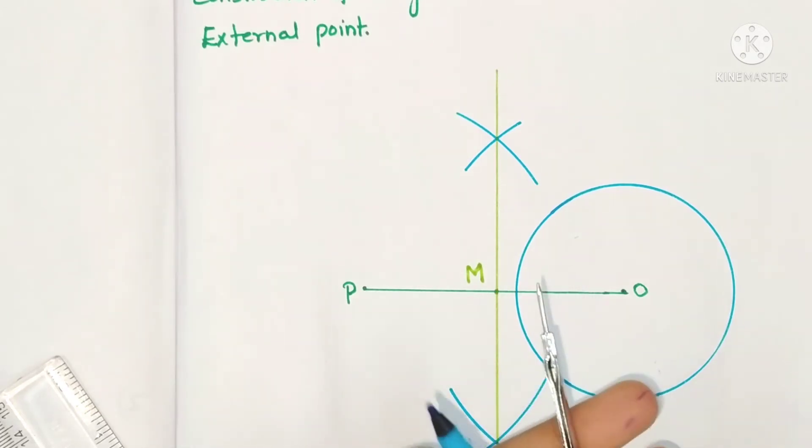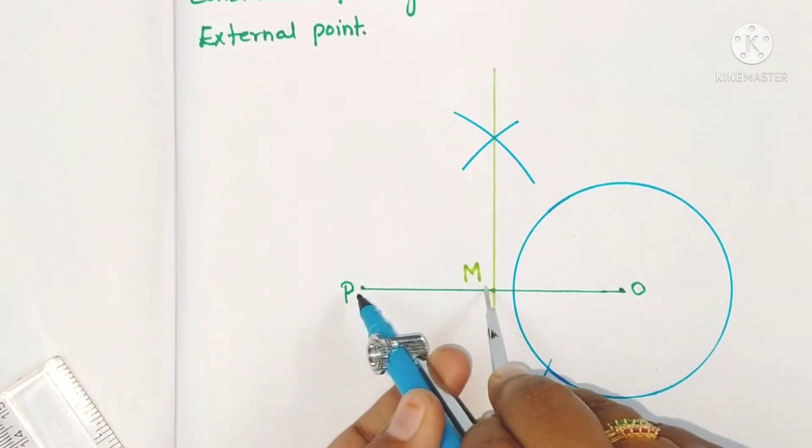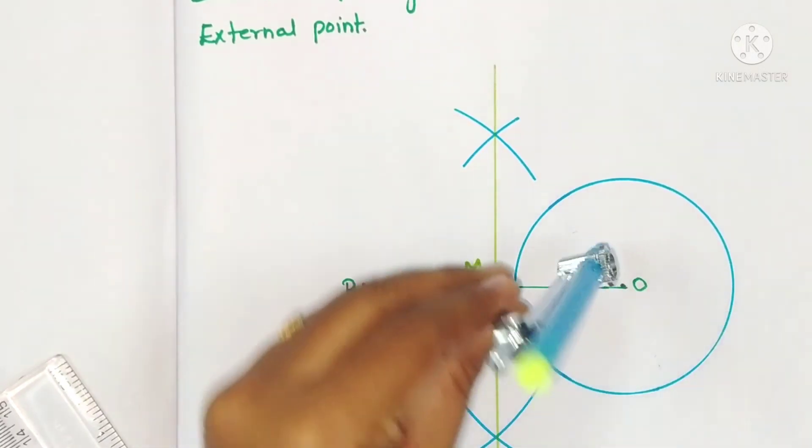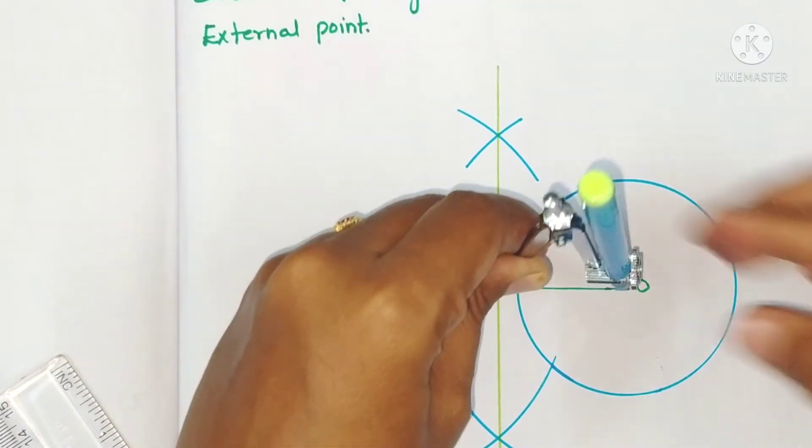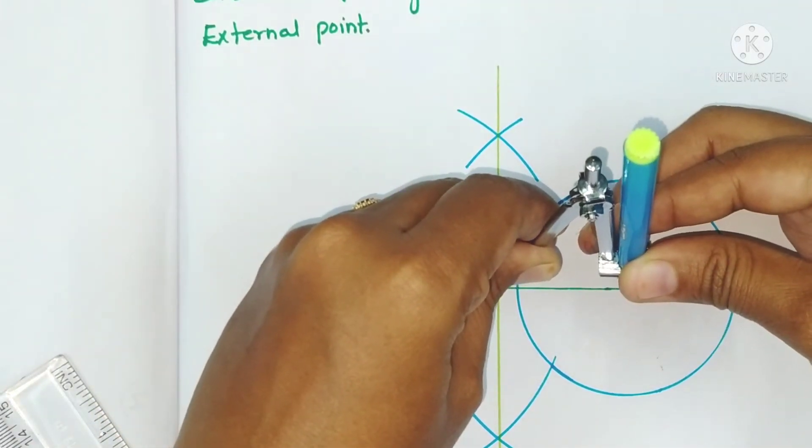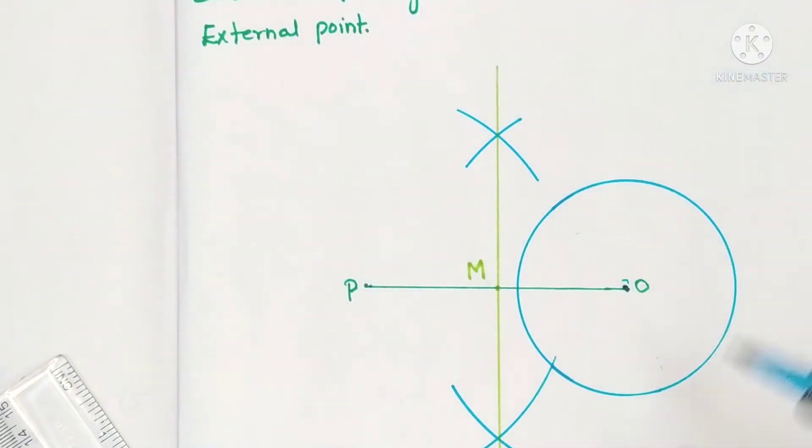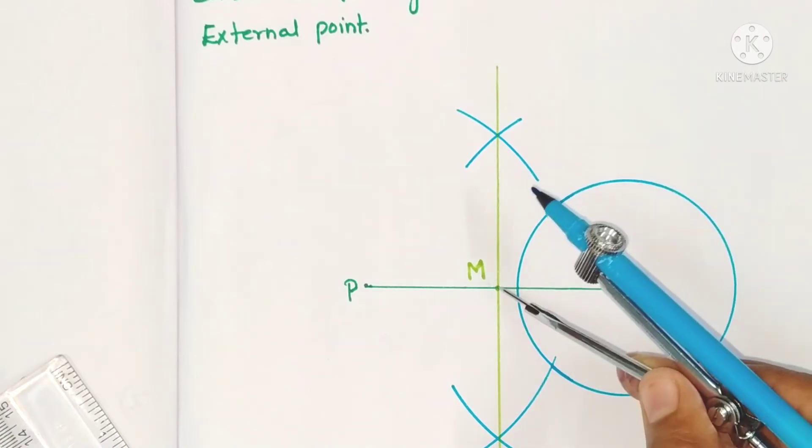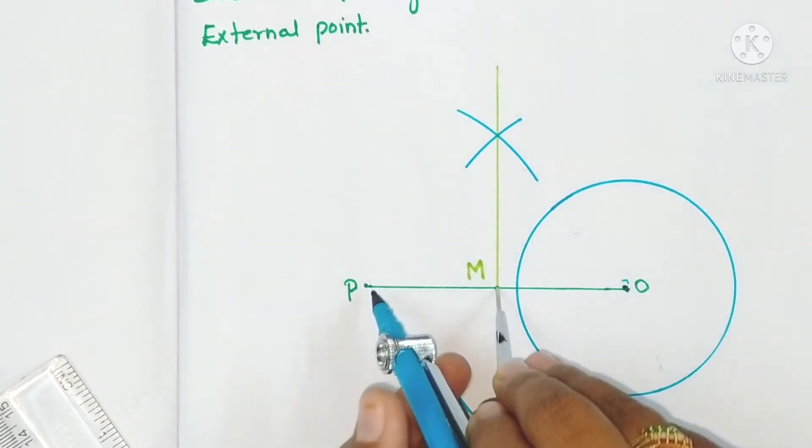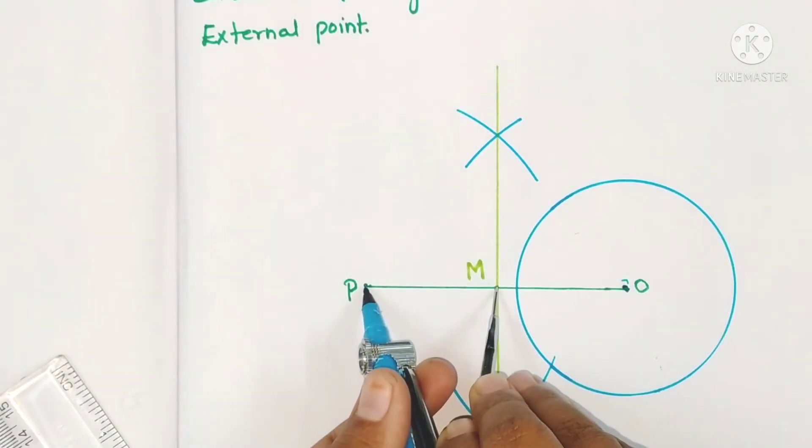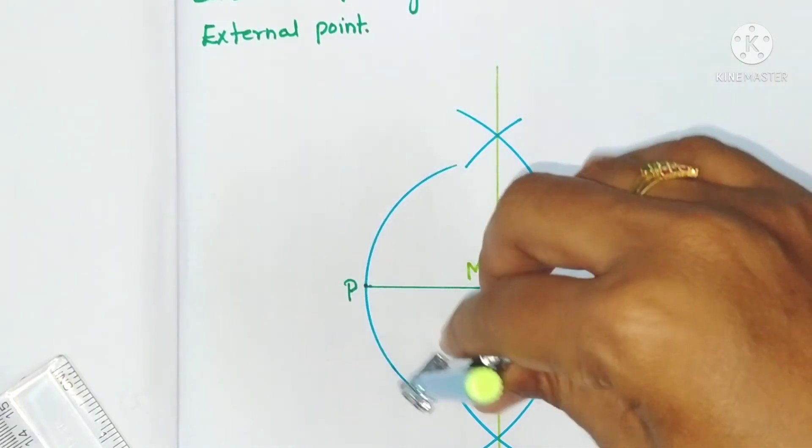Again, take the compass and now with M as center, MP or MO as radius—if you measure both, the radii are the same, MP or MO both are the same. So by taking M as center with MP or MO as radius, draw the circle, not arc, draw the circle.